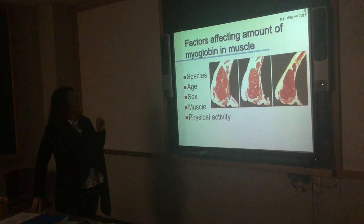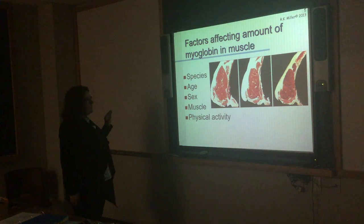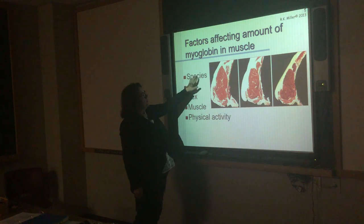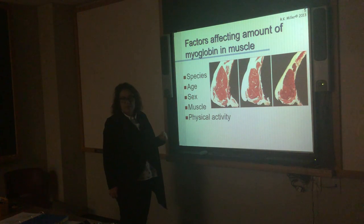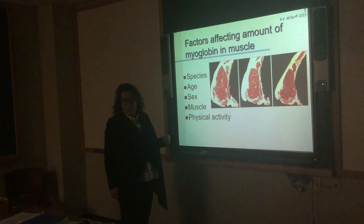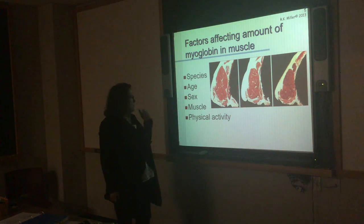So there are factors that affect color. One of the first is how much myoglobin is present in a meat. We know that meat from different species looks different. Whale meat is very dark red, horse meat is pretty dark red, beef is bright cherry red, lamb is pinkish red, pork is grayish pink, and fish — we have white fish and darker fish. Species affects how much myoglobin is there.